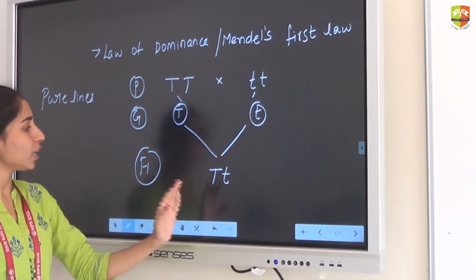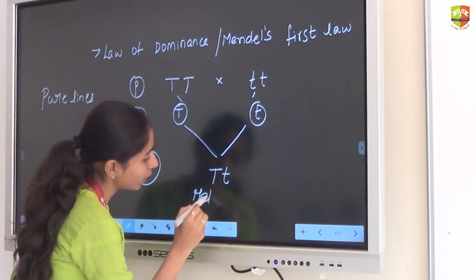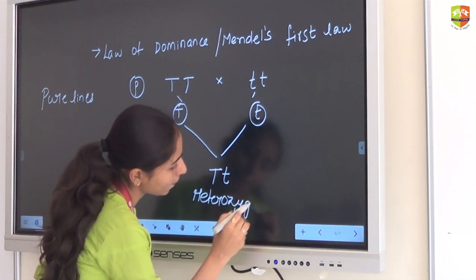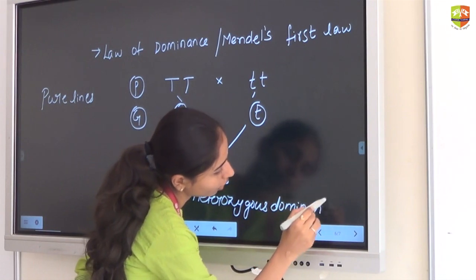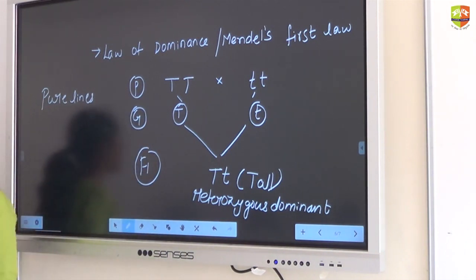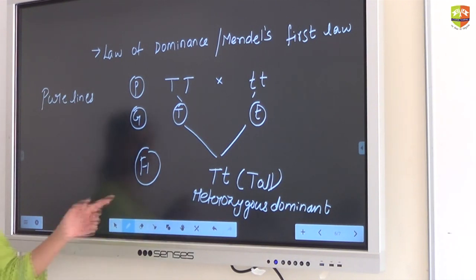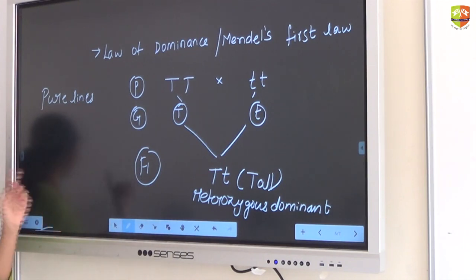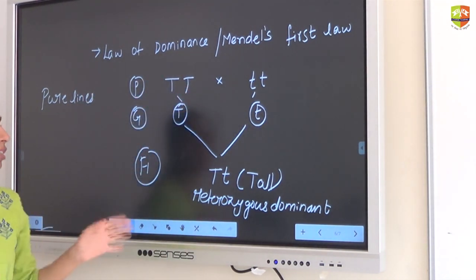In the F1 generation we get capital T small t, which is heterozygous dominant and it is tall. As stated in the definition, the F1 generation offspring should be tall or dominant. The F1 generation is dominant. That is the law of dominance.